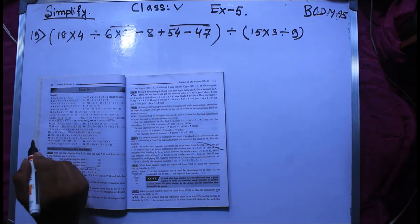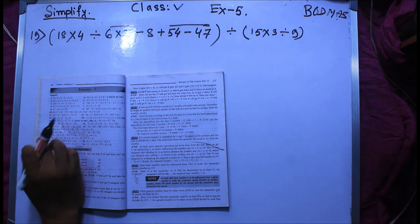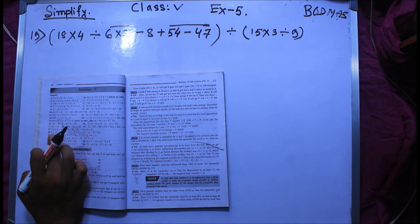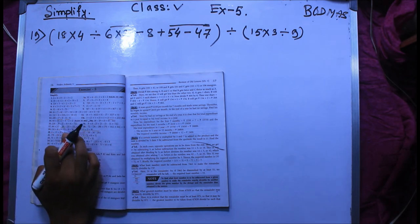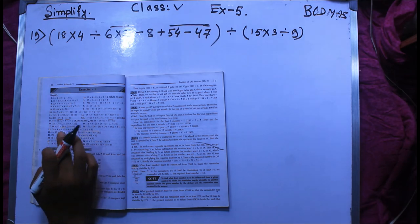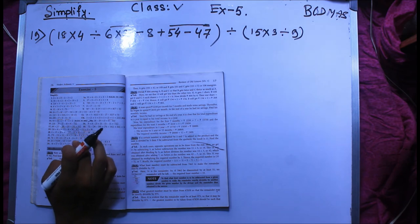I am going to add 19 number. So 19 is going to add first bracket 18 into 4 divide 6 into 2, minus 8 plus 54 minus 47, first bracket 6, divide first bracket 15 minus 3 divide 9, first bracket 6.